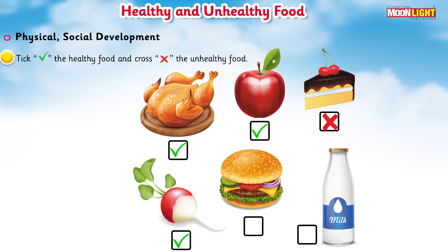Now moving to the next one — this is the burger, and burger is an unhealthy food. So we will mark a cross with red color because burger is an unhealthy food. This is also a junk food.